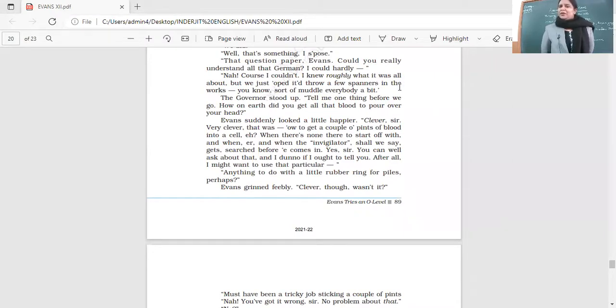The governor stood up. 'Tell me one thing before we go. How on earth did you get all that blood to pour over your head?' So it was Evans who was there in the cell. McCleary had left. McCleary had been escorted outside and couldn't take such a risk because his face would be very clearly visible. There was no way he could hide his face. Evans suddenly looked a little happier. 'The governor's praising him. Clever, sir, very clever. That was how to get a couple of pints of blood into a cell when there's none to start off with, and when the invigilator gets searched before he comes in. Yes sir, you can well ask about that.' There was something - the invigilator was going to get checked. He could not get in. Even his penknife was taken away. So there was one thing which was a little suspicious - what was that? The rubber ring. 'Anything to do with the rubber? Little rubber ring for piles perhaps?'